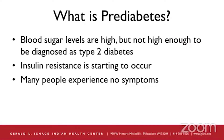What is prediabetes? Prediabetes is when blood sugar levels are high, but not quite high enough to be diagnosed as type 2 diabetes. It's important to note that at this point, insulin resistance is starting to occur, and your body is not responding to insulin as effectively as it should be. Many people actually don't experience any symptoms of prediabetes.